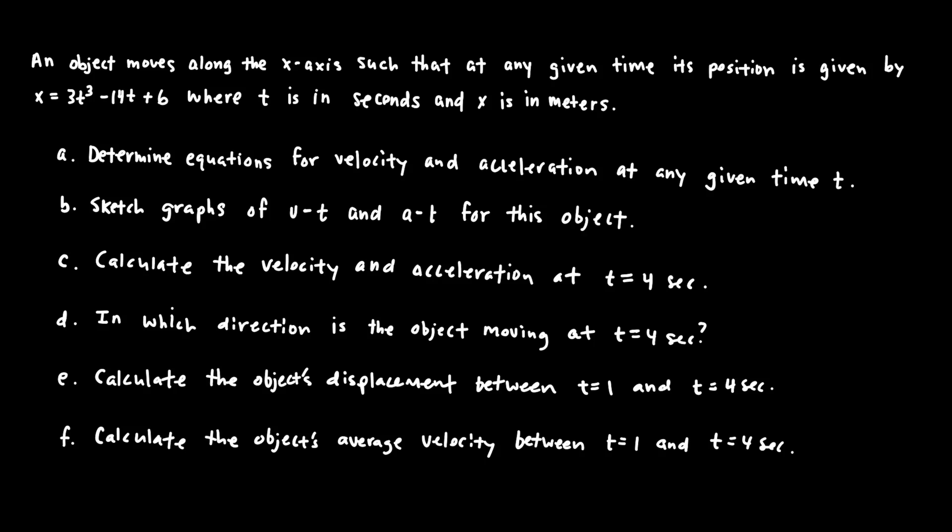An object moves along the x-axis such that at any given time, its position is given by this position-time equation: x equals 3t cubed minus 14t plus 6, where t is in seconds and x is in meters. There are several questions we're going to answer about this object: determining equations for velocity and acceleration, sketching graphs, calculating values at a particular moment, and answering questions about direction, displacement, and average velocity.